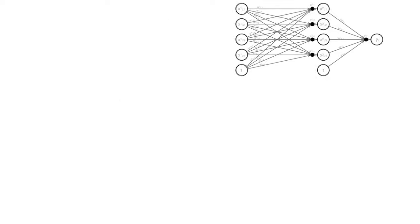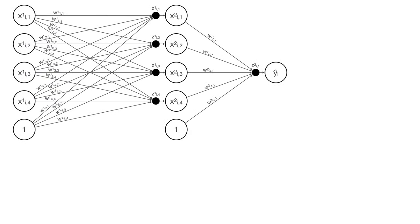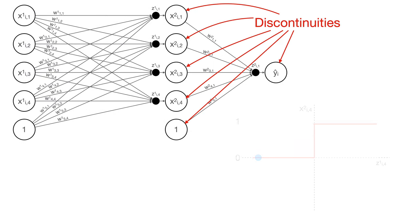Secondly, each of the hidden layer nodes and the output node suffer from a discontinuity. As we increase one of the input weights, the output abruptly changes from 0 to 1, or from 1 to 0. In other words, our model isn't a smooth function, thus it's not differentiable. And if our goal is to use gradient descent, we'll need our model to be a smooth, differentiable function. So, we need to make some adjustments to our model.